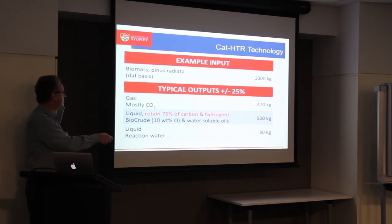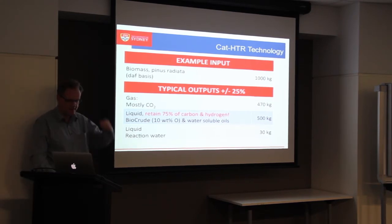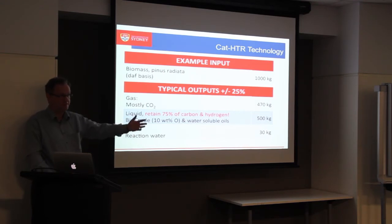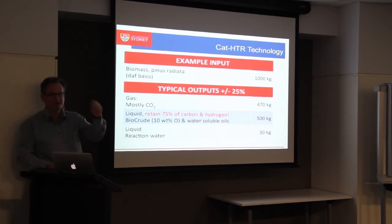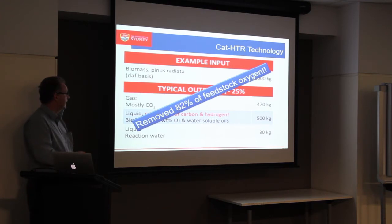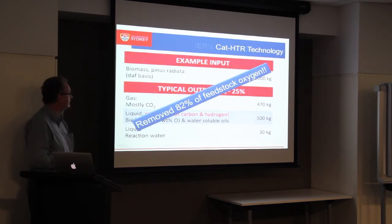Starting on a dry basis with a thousand kilograms of wood, we get about half a ton of liquids and half a ton of CO2 and water as a reaction product. You may say: that's terrible, you take a ton of wood and only make half a ton of oil. But a ton of wood is basically half a ton of oxygen — you can't do anything with oxygen, you've got to remove it. This is close to the theoretical maximum in terms of atomic composition. We remove 82% of the oxygen in that feedstock in one hit. In nature that can take 100 to 150 million years — we do it in 15 minutes.